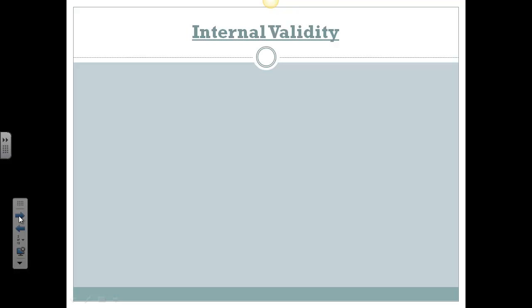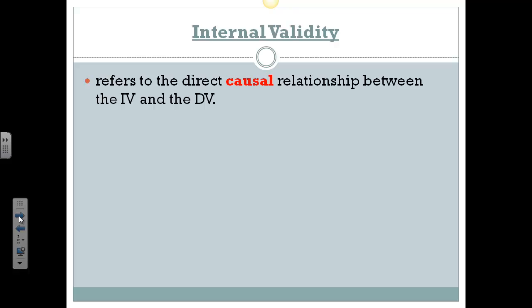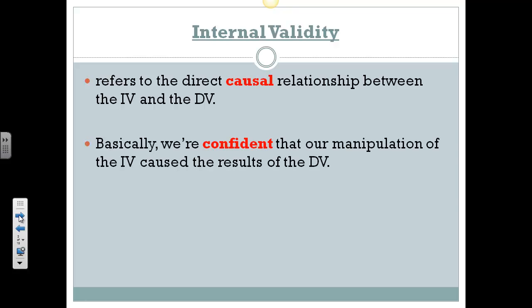We're going to talk about internal validity first. Internal validity of our test refers to the causal relationship in our experiment between the IV and the DV. So when we claim that with the experimental method we can conclude cause and effect, the more we control variables other than the IV, the more likely we can say that our results are valid — that the test measured what it was supposed to measure, the effect of the IV on the DV. Basically, with internal validity, we're confident that our manipulation of the IV actually caused a change in the DV because we controlled other variables.